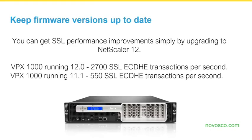Keep firmware versions up to date. Firmware updates aren't just about fixing bugs or adding new features — Citrix also optimizes code in firmware updates. As an example, a VPX 1000 running NetScaler 11.1 processed 550 SSL transactions per second, while NetScaler version 12 processes 2,700 SSL transactions per second — just with a simple upgrade. That's another great reason to keep your NetScalers on the latest versions.